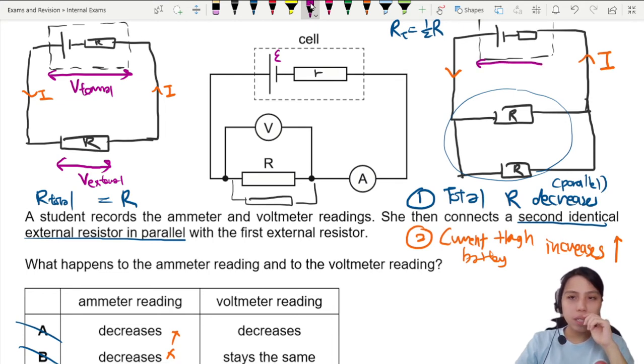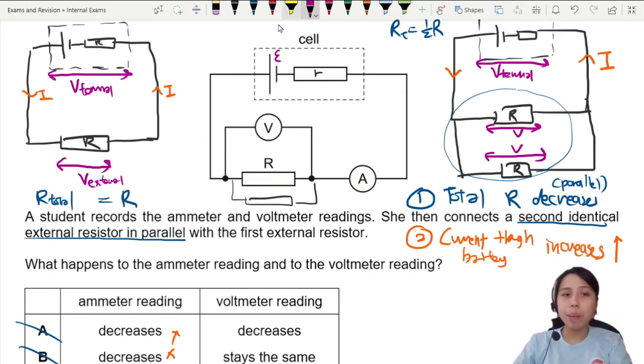So then you need to ask the question: Did the terminal potential difference change or not? Because the terminal potential difference is what will be given to all the resistors here and here. All have the same V, all in parallel. So then you have to think very carefully about terminal potential difference.